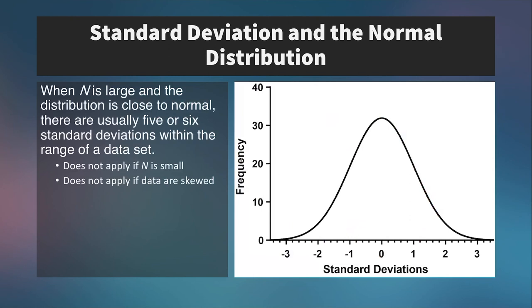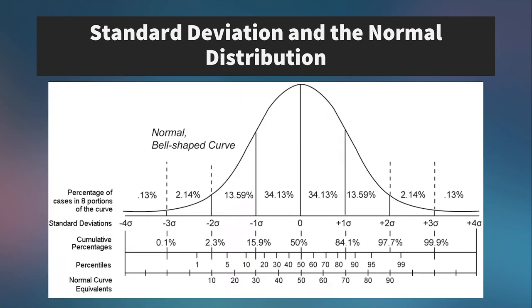Now, what's really neat is that the standard deviations and the normal distribution have a relationship that we can count upon when describing our data. So when N is large and close to normally distributed, there are usually five or six standard deviations within the range of a data set. Now, here's a normal bell-shaped curve or a Gaussian curve. And what's charted out on multiple X axes, we have the standard deviations. So let's start there.